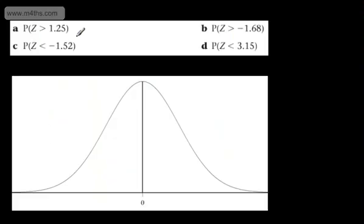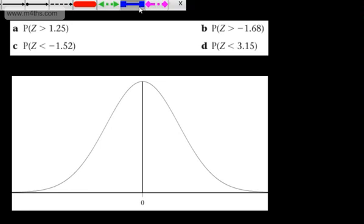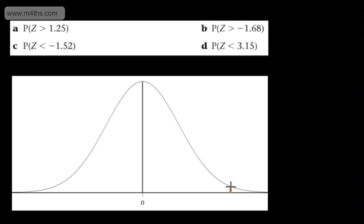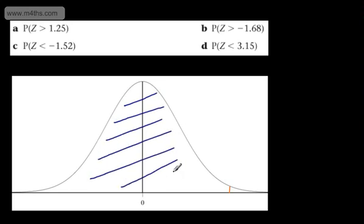Last one. Nice, straightforward one to finish off with. The probability of Z being less than 3.15. So let's put that there. And this is going to be pretty high. So we're looking at a pretty straight line. We're interested now in the area to the left of the line under the curve, and that's this area right here.